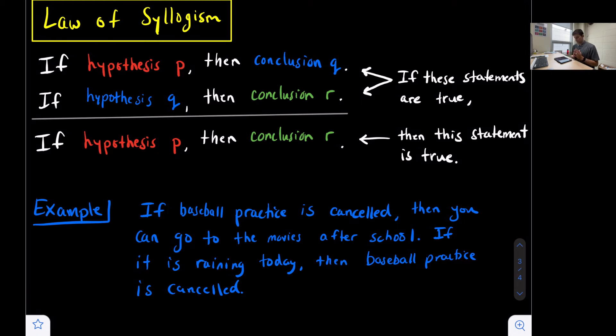It says, if the hypothesis P, then conclusion Q. Then our second statement would be, if hypothesis Q, then conclusion R. So this part right here is what we're looking for. We're looking for a part of a statement that's listed twice. It's the conclusion of one statement, but it's the hypothesis of the other statement. And it doesn't matter which order the statements come in, we can still write this third statement below.